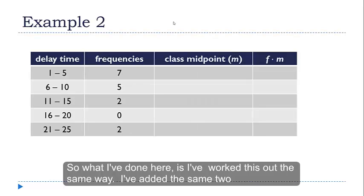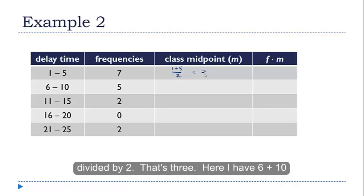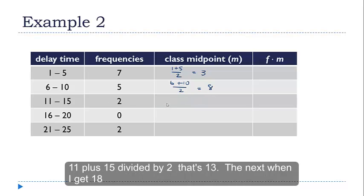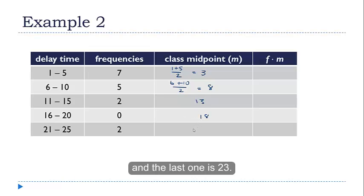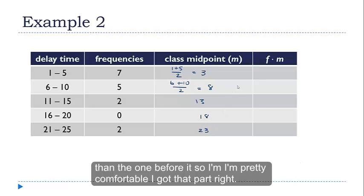So what I've done here is I've worked this out the same way. I've added the same two new columns and I'm going to calculate these class midpoints. This one is going to be 1 plus 5 divided by 2. That's 3. Here I have 6 plus 10 divided by 2. That's 8. 11 plus 15 divided by 2. That's 13. The next one I get 18. And the last one is 23. You can do your quick check here. Each one of these is 5 more than the one before it. So I'm pretty comfortable I got that part right.